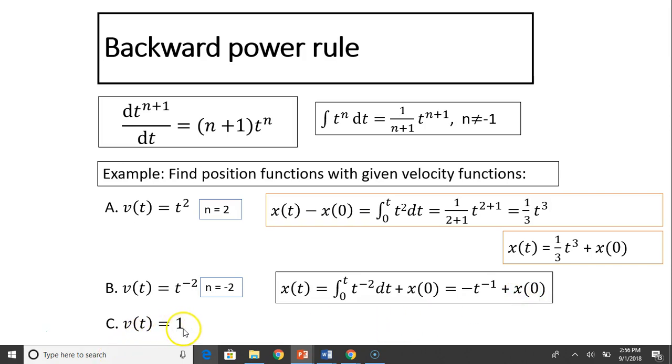Last one, v(t) equals 1. So a lot of times, this is pretty common. In that case, n equals 0. So the original function that gives this derivative is just t. So x(t) equals t plus, again, x at t equals 0.